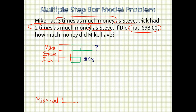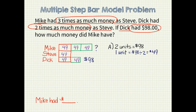Now, look at the model drawing. What do you think we should do first? We need to find out how much money each unit bar represents. We know that Dick had $98 and he has two unit bars, so two units equals $98. If two units equals $98, how much does one unit equal? 98 divided by 2 equals $49. Now I can fill in $49 for each unit. I need to find out how much money Mike had and he has three units, so 3 times 49 equals 147. Mike had $147.